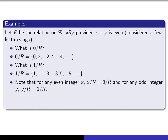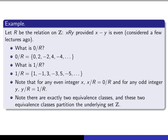I worked out two examples — 0 slash R and 1 slash R — but if X is any even integer, X slash R is the set of all integers Y such that X minus Y is even. Since X is even, the only way that can happen is if Y is even, so X slash R equals the set of all even integers. Similarly, if Y is any odd integer, Y slash R is the set of all odd integers — the same as 1 slash R. So there are exactly two different equivalence classes, and every element of the underlying set Z lies in one or the other. Those equivalence classes partition the set of all integers into these two sets.